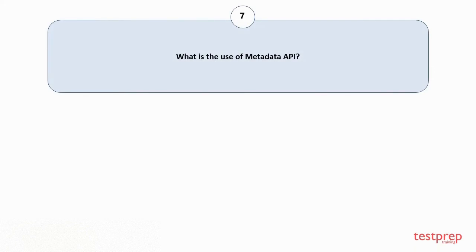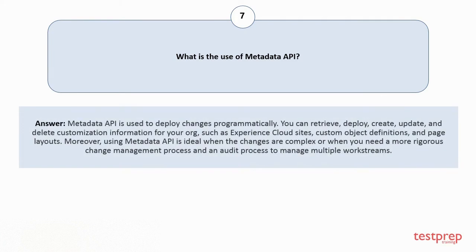Question number seven: what is the use of Metadata API? Metadata API is used to deploy changes programmatically. You can retrieve, deploy, create, update, and delete customization information for your org, such as Experience Cloud sites, custom object definitions, and page layouts. Using Metadata API is ideal when the changes are complex or when you need a more rigorous change management process and an audit process to manage multiple work streams.